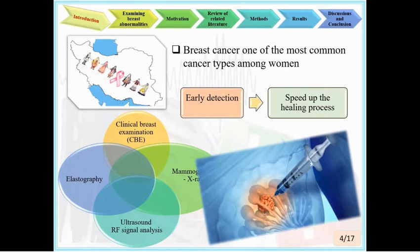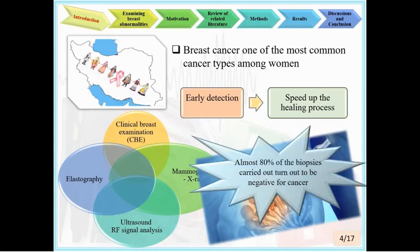Therefore, using a low-cost, non-invasive, non-radioactive, portable, and accurate method as a tool for identifying the existence and type of breast tissue abnormalities is necessary. Due to high false positive rates of other methods, about 18% of sampling results indicate non-cancerous and benign lesions.